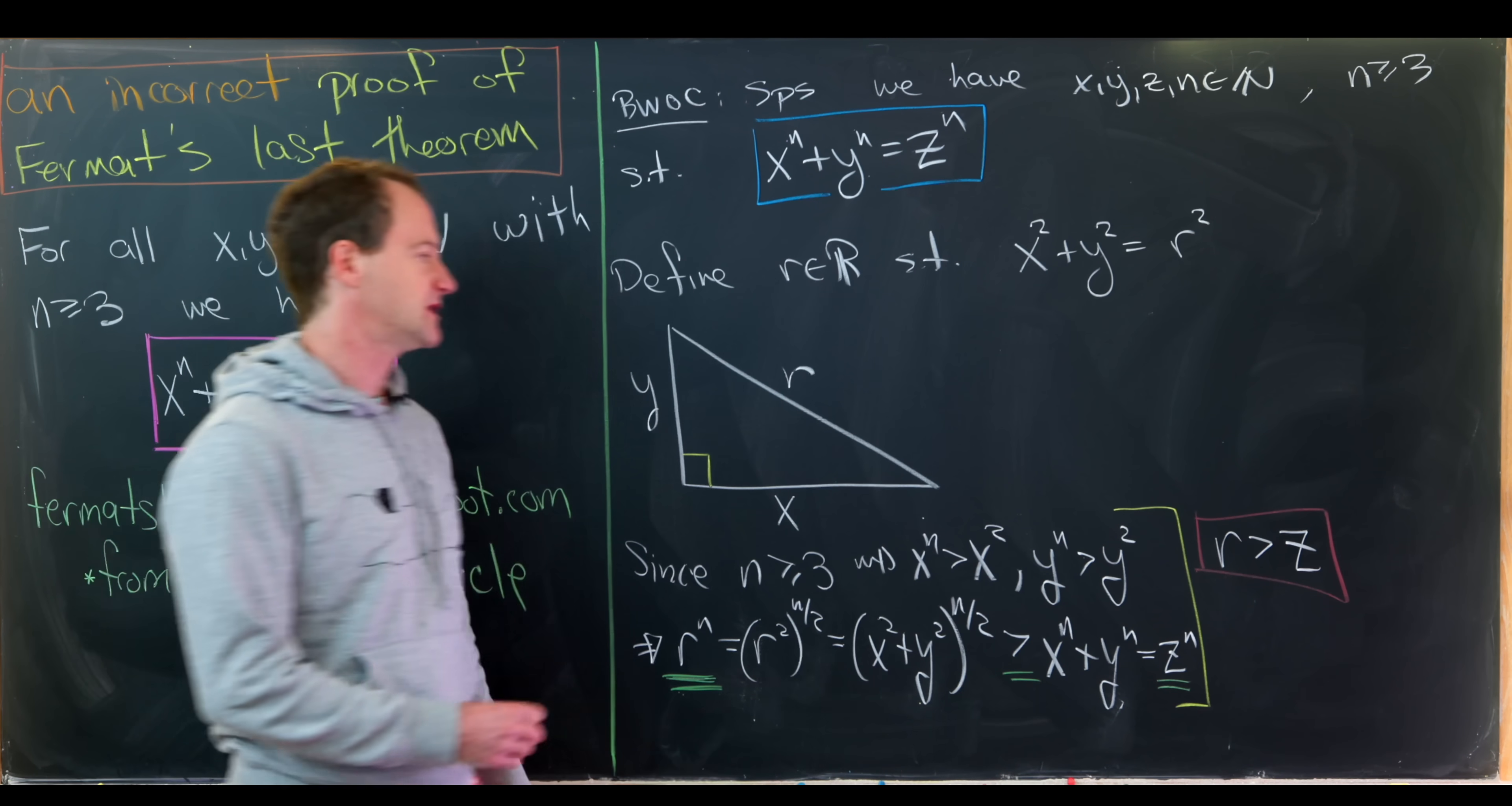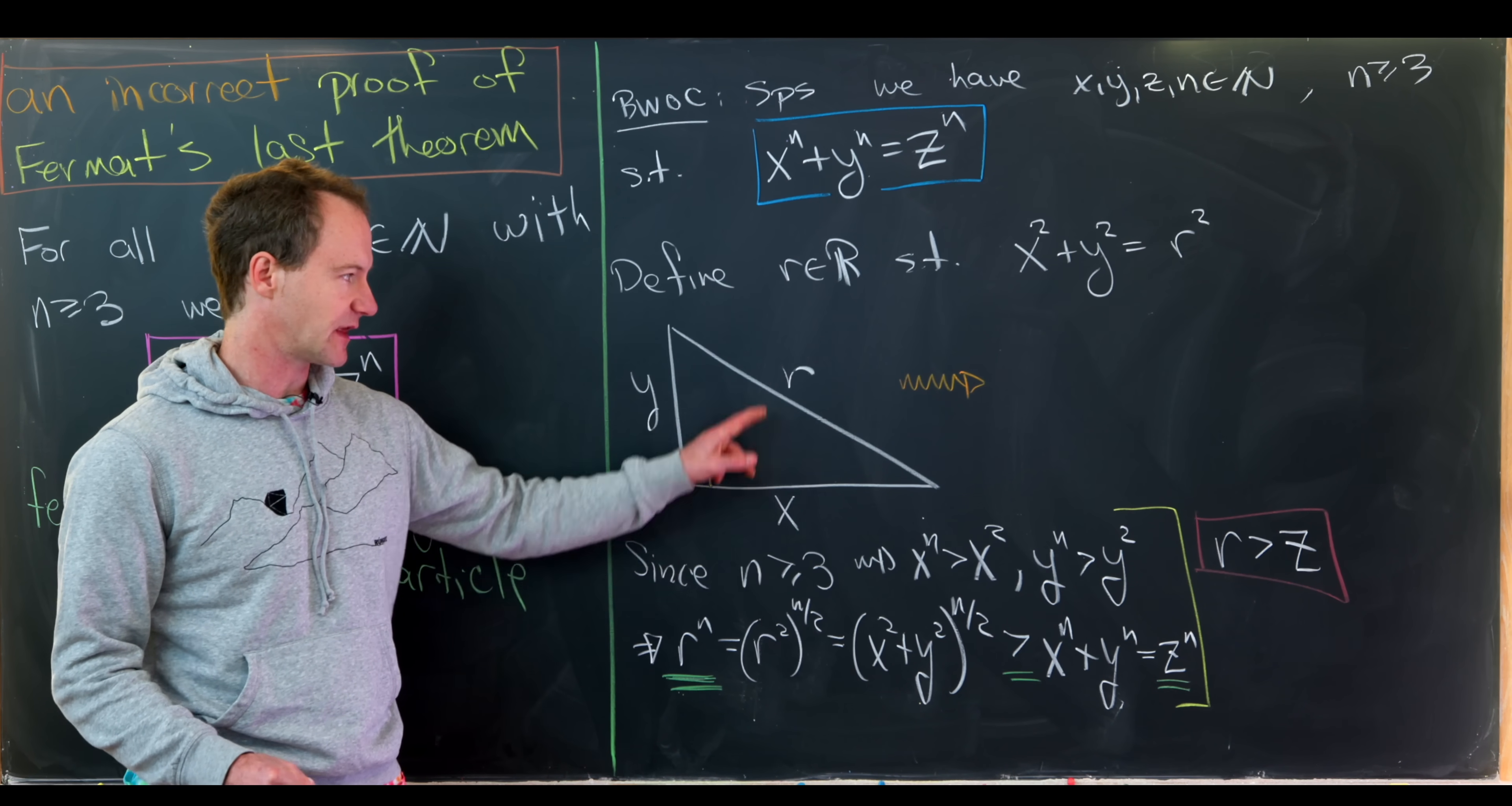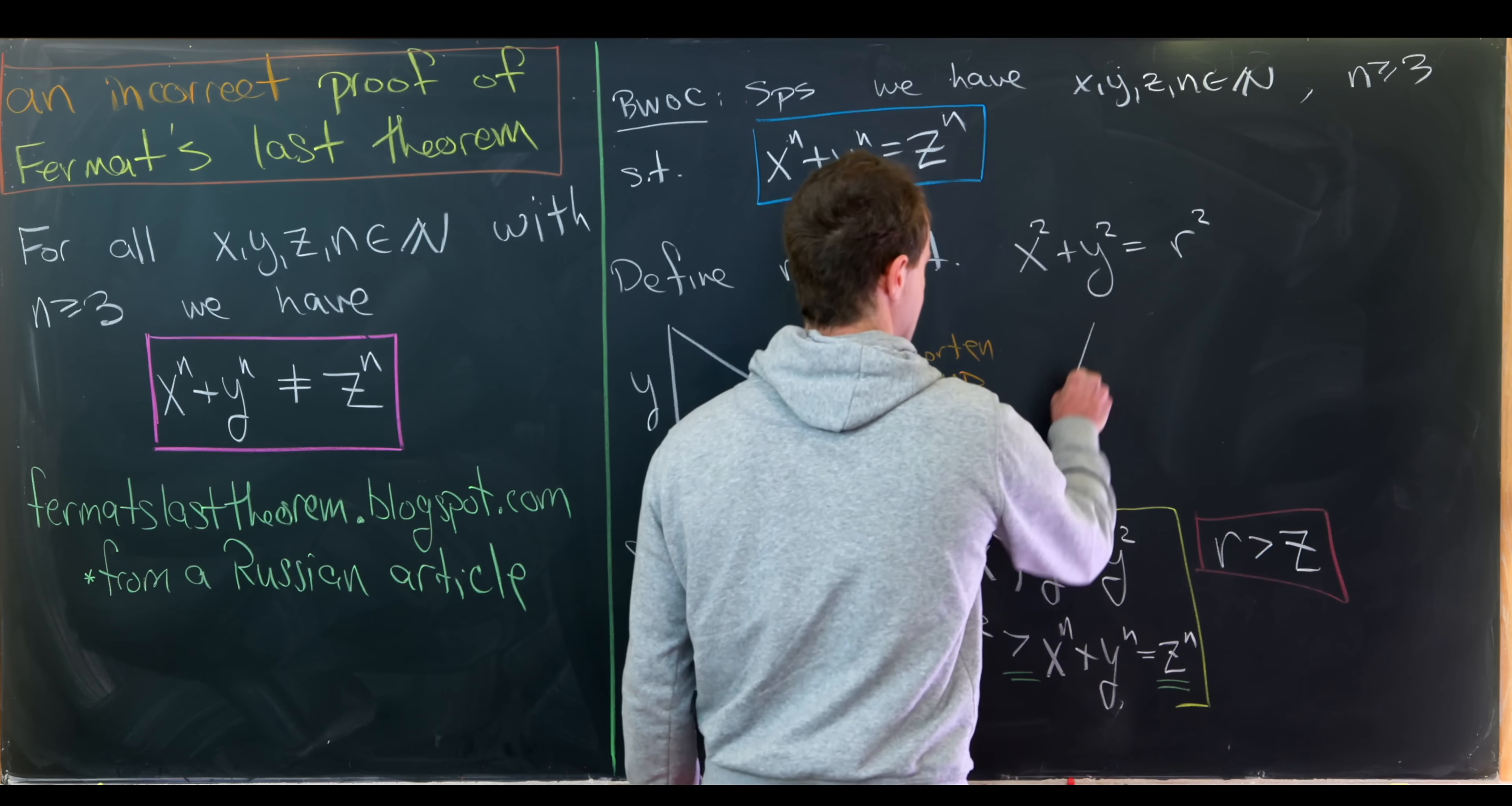So now from here we're going to go up to this triangle and we're going to shorten the hypotenuse. Well, no longer will it be a hypotenuse because if we shorten this side right here, this angle will decrease. So just to reiterate, we're leaving y and x the same length and we're shortening this r. So let's shorten r until it coincides with the number z. We can do that because r is bigger than z. We just showed that. So that's going to give us something like this.